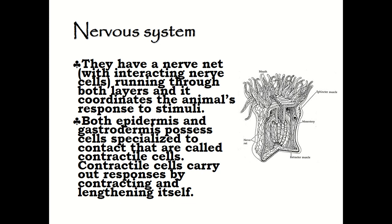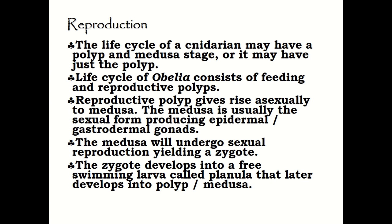For reproduction, the life cycle of cnidarians may include both polyp and medusa stages, or just a polyp stage. For example, the life cycle of Obelia consists of feeding and reproductive polyps. Reproductive polyps give rise sexually to medusae. The medusa is usually the sexual form of the cnidarian, producing epidermal or gastrodermal gonads. The medusa undergoes sexual reproduction yielding a zygote, which develops into a free-living larva known as a planula that later develops into either a polyp or medusa.